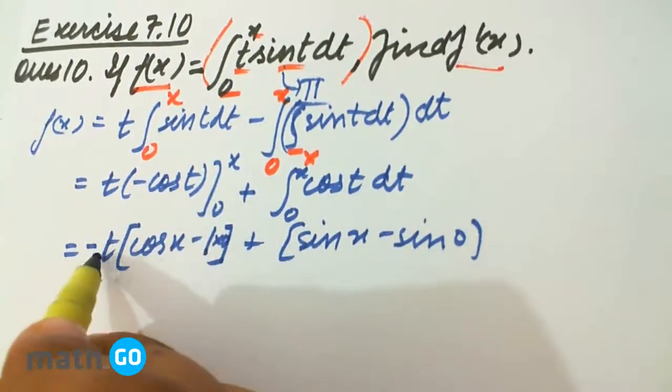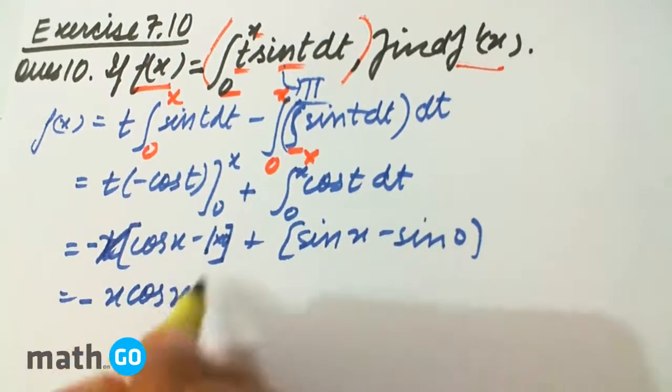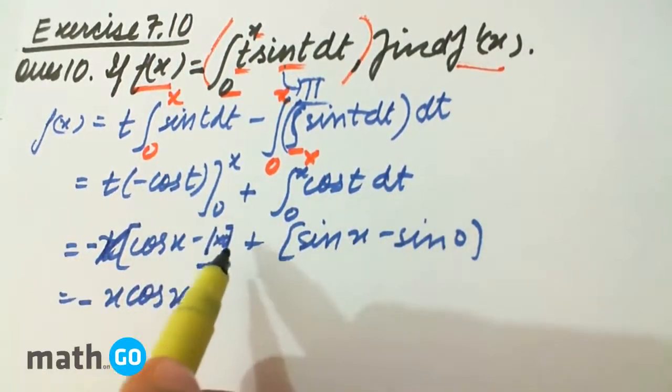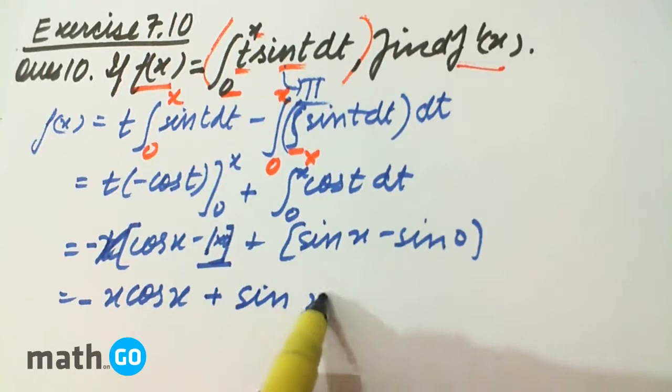So x here is x, so minus x cos x. The 0 term turned out to be 0 completely, plus sin x.